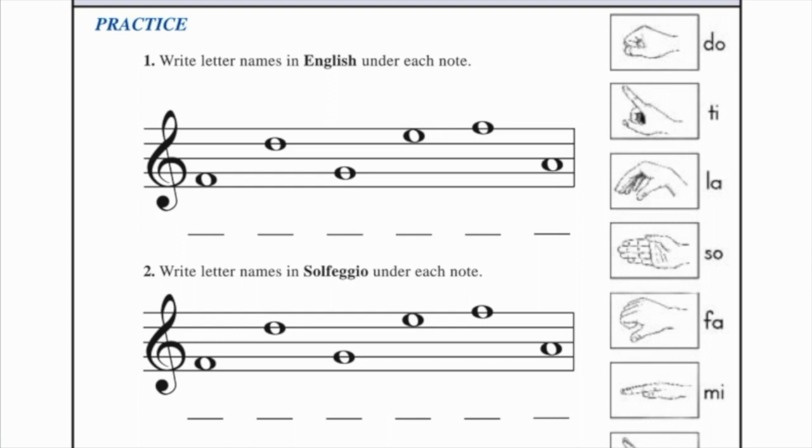First example is on the first space, the letter F, and in solfeggio, F is FA.